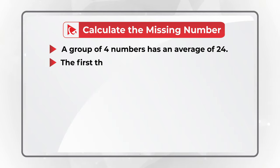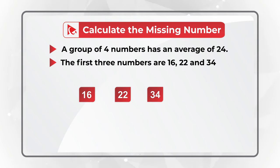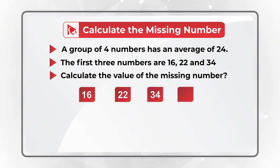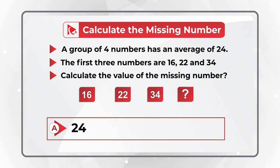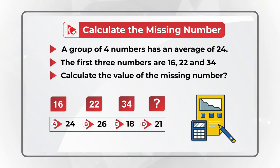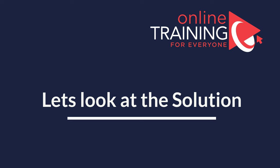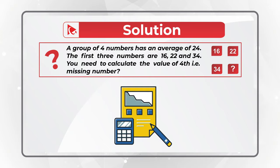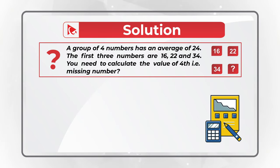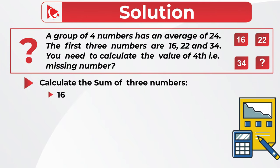Here's one of my favorite questions where you need to do mental math. You are presented with a group of four numbers with an average of 24. The first three numbers are 16, 22, and 34. You need to find the missing fourth number. Choices: A) 24, B) 26, C) 18, D) 21. To solve it, first calculate the sum of the three existing numbers: 16 plus 22 plus 34 equals 72.